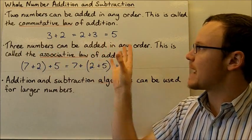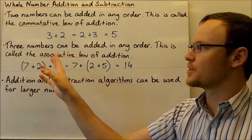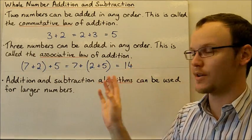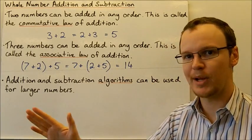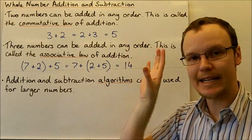Three numbers can be added in any order. This is called the associative law of addition. Subtraction, once again, does not apply to subtraction, only addition.